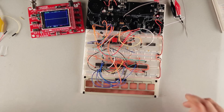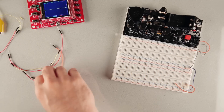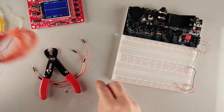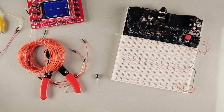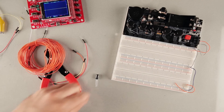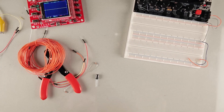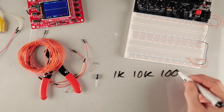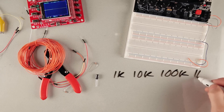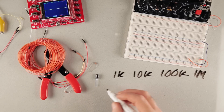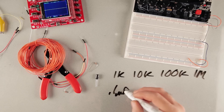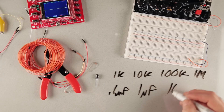I'll show you the materials you need and then how to put it together. You're going to need some wire, some wire strippers. We're going to use some capacitors and resistors. And as in the other videos, I'm just using the most common values: 110, 100k, and 1M. And for capacitors, I'm going to be using 0.1uF, 1uF, and 10uF.